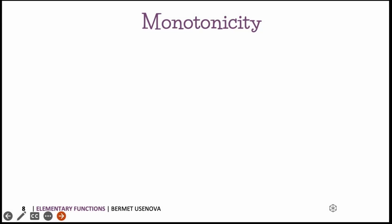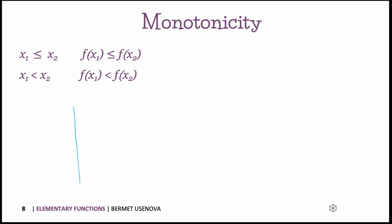Next I want to talk about the property of a function being monotonic or strictly monotonic. To understand this concept we need to consider the following. We have some arbitrary function and some arbitrary interval with points x1 and x2 equal to minus 2 and plus 2, with corresponding y values of minus 1 and 1 — y1 and y2. The function is said to be monotonically increasing on the interval.